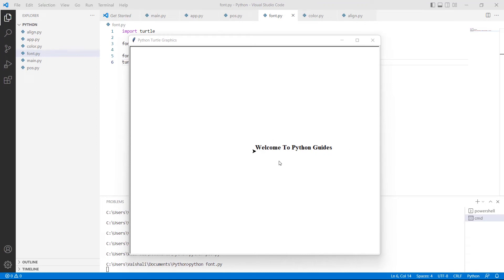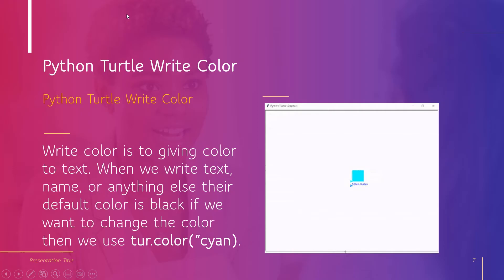Now let's discuss about Python Turtle Write color. Write color is about giving color to text. When we write text, name, or anything else, their default color is black. If we want to change the color, then we use turtle.color() function.